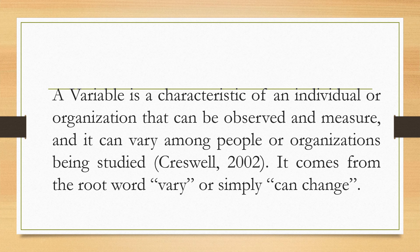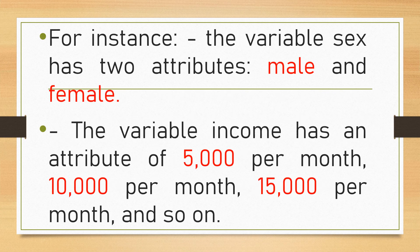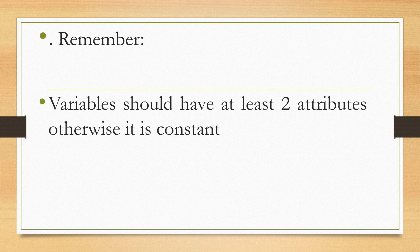Variables can vary. For example, the variable 'sex' has two attributes: male and female. Another example is income — such as the income of residents in Brooks Point. We can ask: who earns 5,000? Who earns 10,000? Who receives a salary of 15,000 in Brooks Point? Remember, a variable should have at least two attributes; otherwise, it is a constant. So it must have at least two attributes or choices.